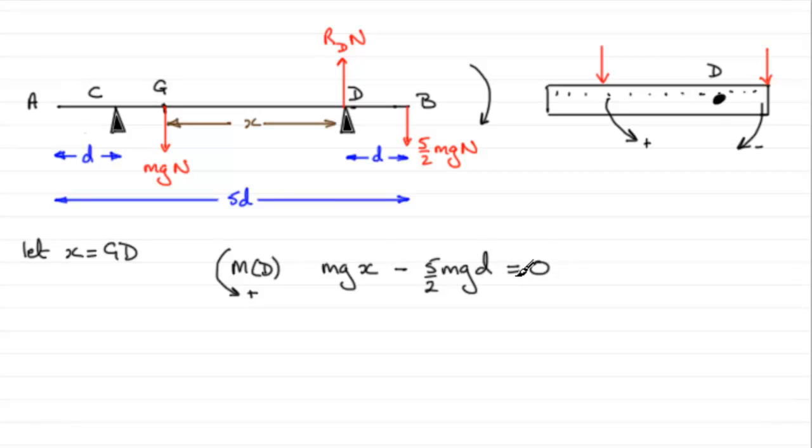So all we need to do now is just work this out for x. So you could cancel mg, it's in every term, and then all we need to do is just add 5 over 2 d to both sides, and you end up with therefore x equals 5 over 2 d. That's what we had to prove - we had to prove that GD, x in other words, equals 5 over 2 d. All right, so that gives you some idea how I would go about that kind of problem.